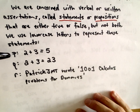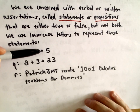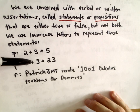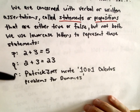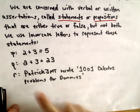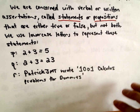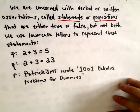Notation-wise we just use lowercase letters to denote these statements. So statement p could be '2 plus 3 equals 5' - that's true. Statement q could be '2 plus 3 equals 23' - that's false. And little r could be 'Patrick JMT wrote 1001 Calculus Problems for Dummies,' which is true. So these are statements; they all have a truth value, true or false.